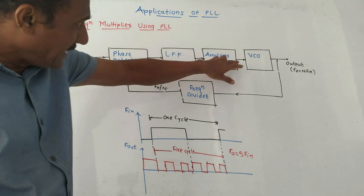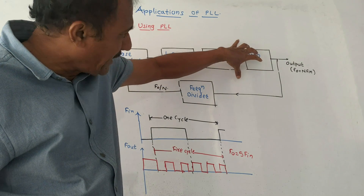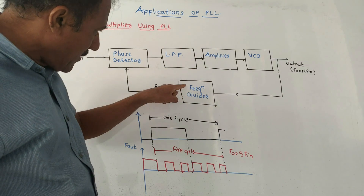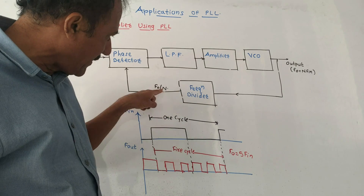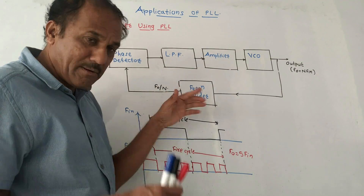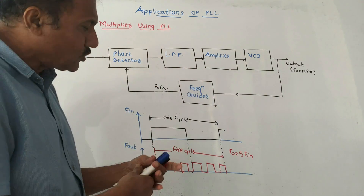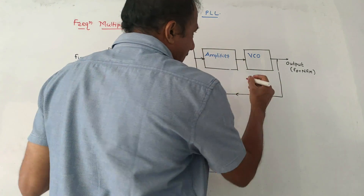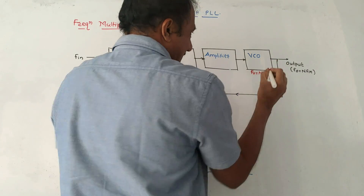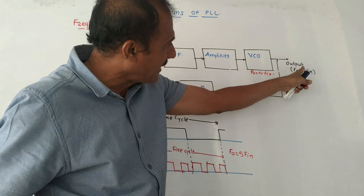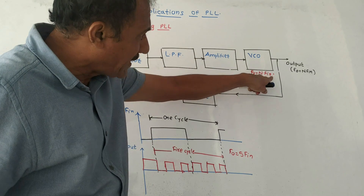Now, the VCO — that is the voltage-controlled oscillator — will try to capture this frequency. We want the output of the frequency divider to equal F0/n. But to produce F0/n at the divider output, the VCO has to run at the frequency F0 equals n times Fn. This signal is taken as the output. So this is called frequency multiplication. PLL will try to make these two inputs to the phase detector equal, and to do so, the VCO must produce the frequency n times Fn, giving n times the input frequency at the output.